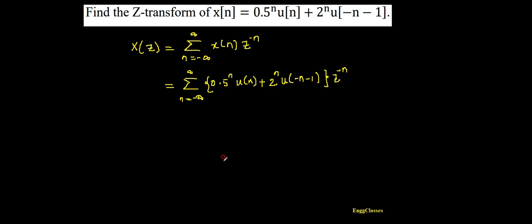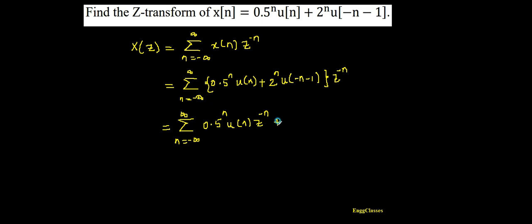It is nothing but summation of (a + b) equals summation of a plus summation of b. Therefore I can write this as: summation from n equal to minus infinity till infinity of 0.5 to the power n times u(n) times z to the power minus n, as the first term, plus summation from n equal to minus infinity till infinity of 2 to the power n times u(-n-1) times z to the power minus n.